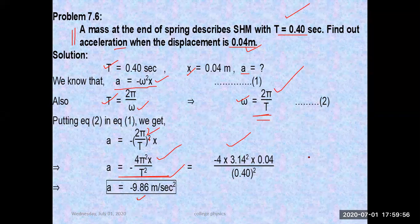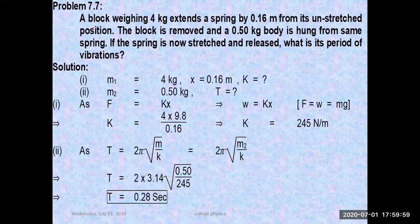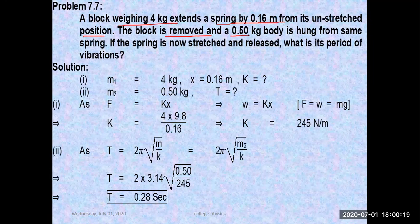Moving forward, this is the given data: a block of weight 4 kg extends a spring by 0.16 meters from its unstretched position at its mean position. Basically, the block is removed and a 0.50 kg body is hung from the same spring. If the spring is now stretched and released, what is its period of oscillation?